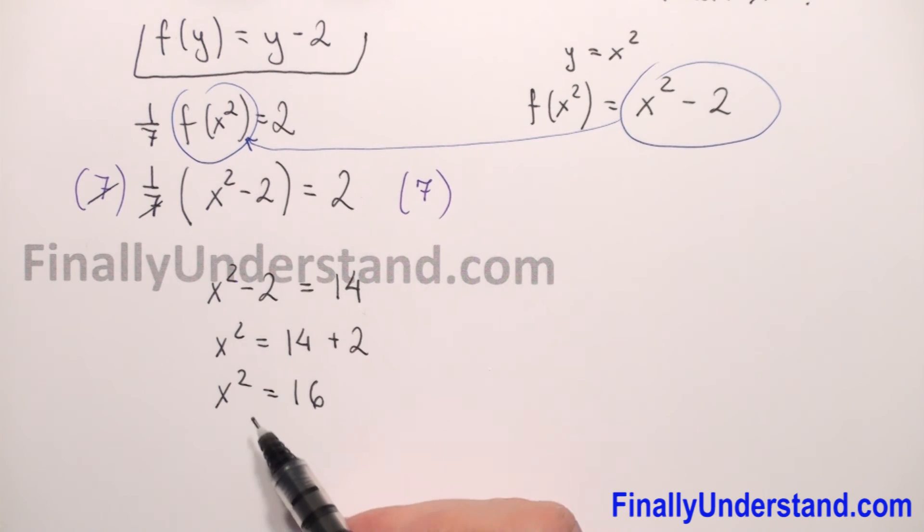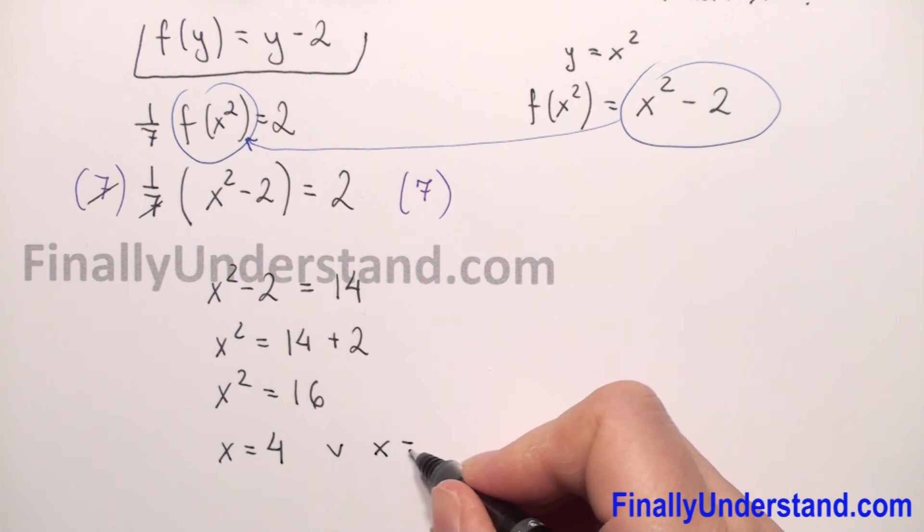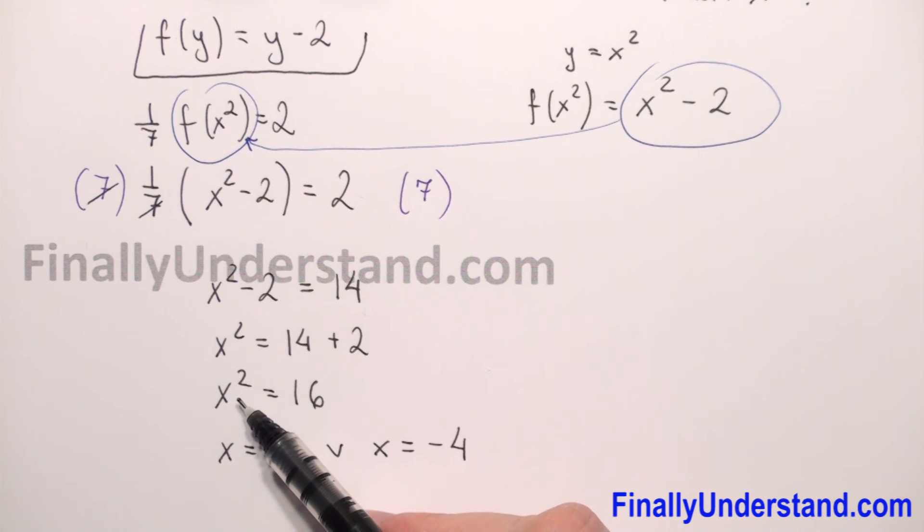So you have to ask yourself which number raised to second power gives you 16. Of course 4, x equals 4 or x equals negative 4 because negative 4 to second power gives me 16 and positive 4 to second power gives me 16.